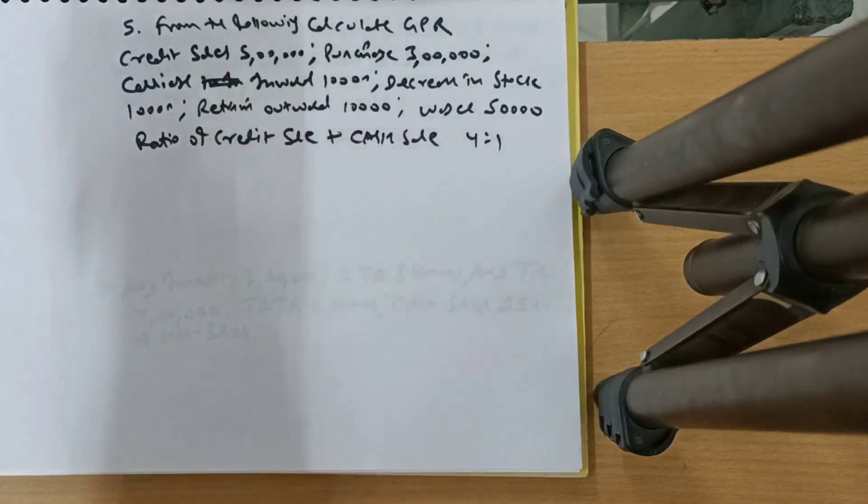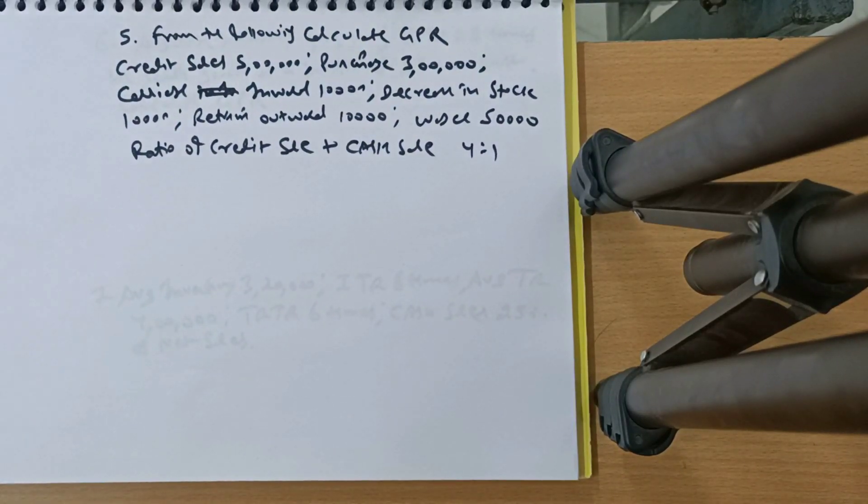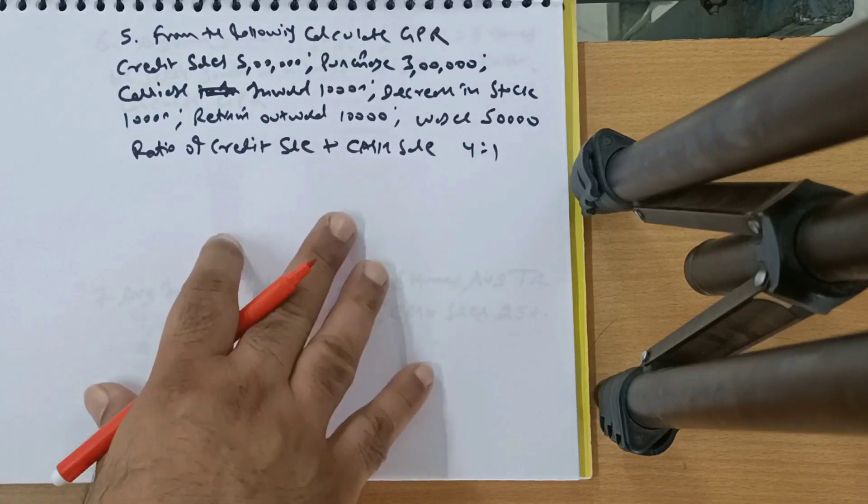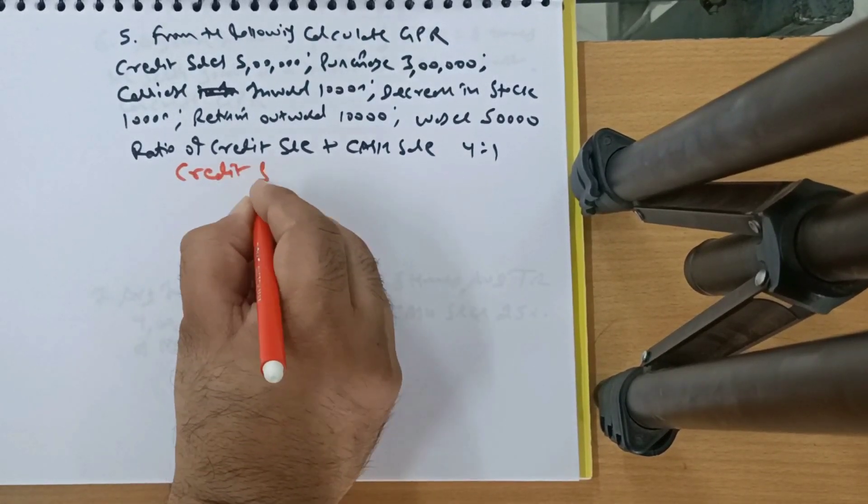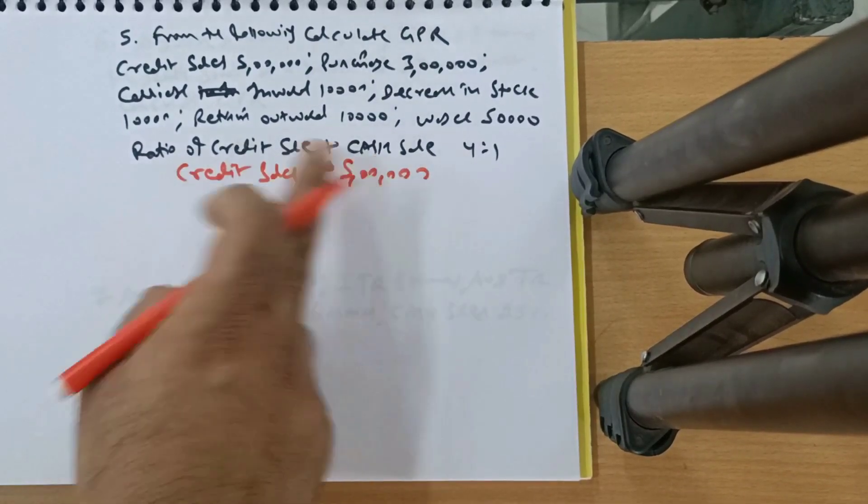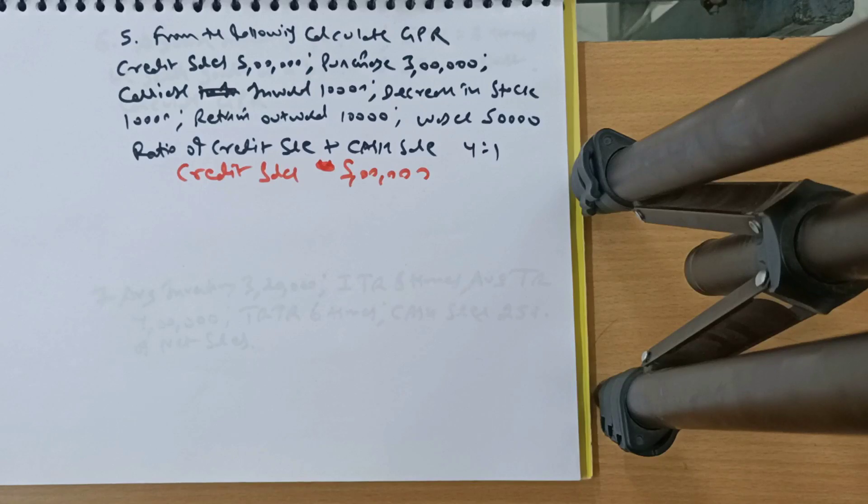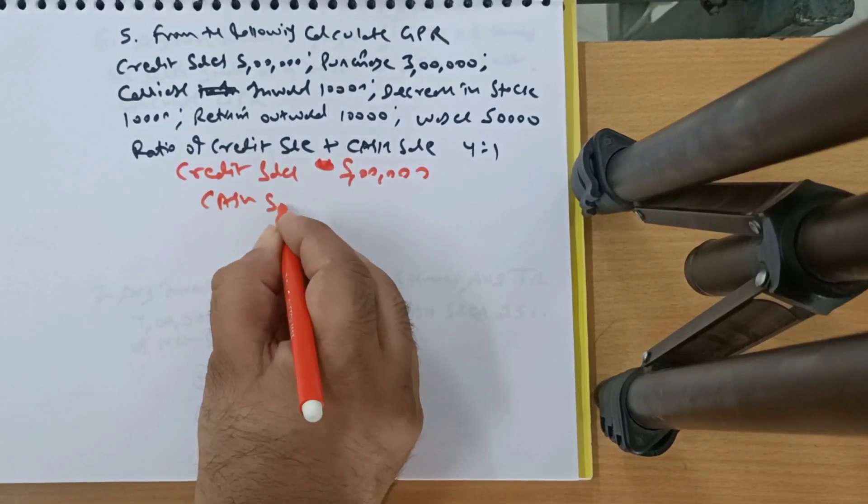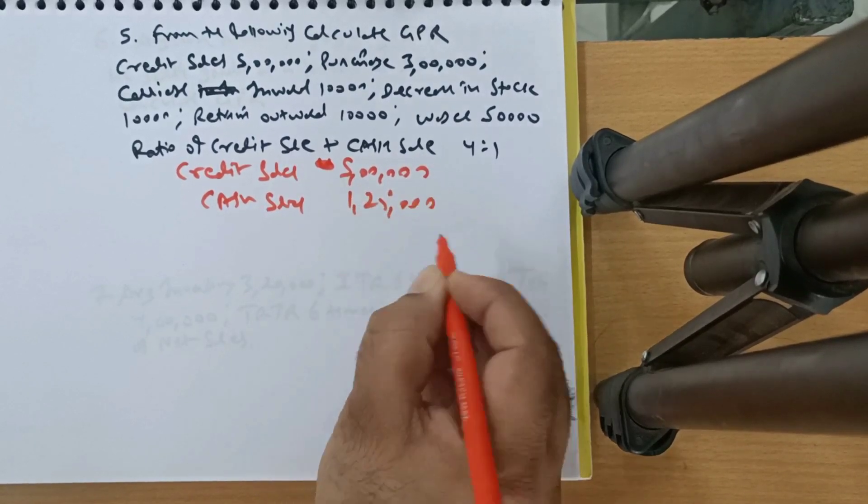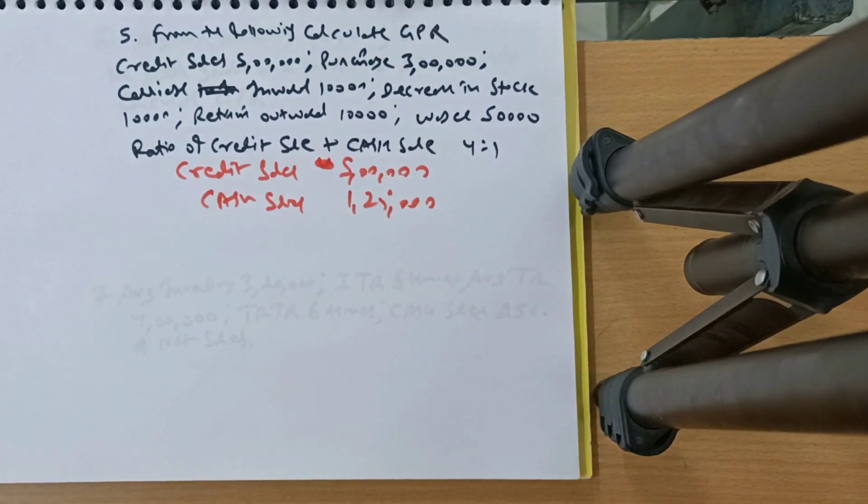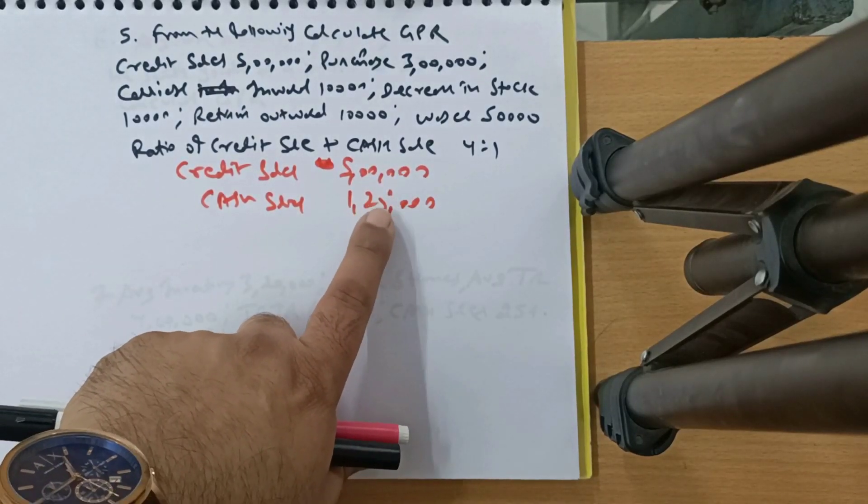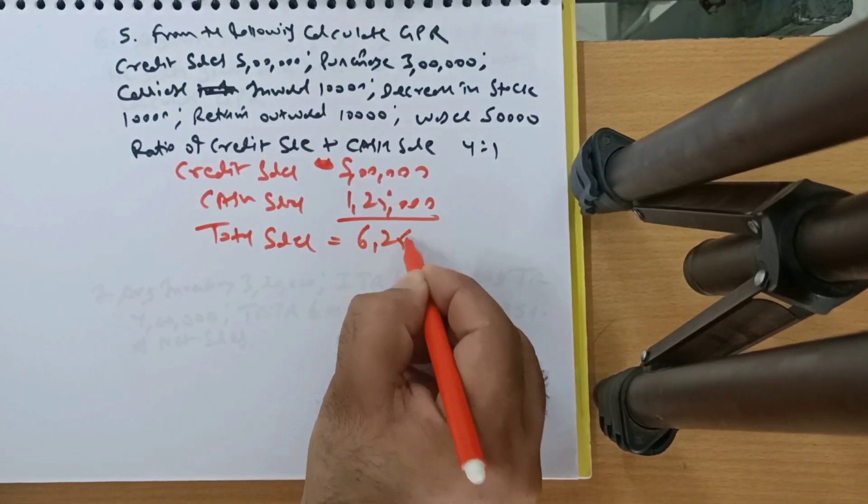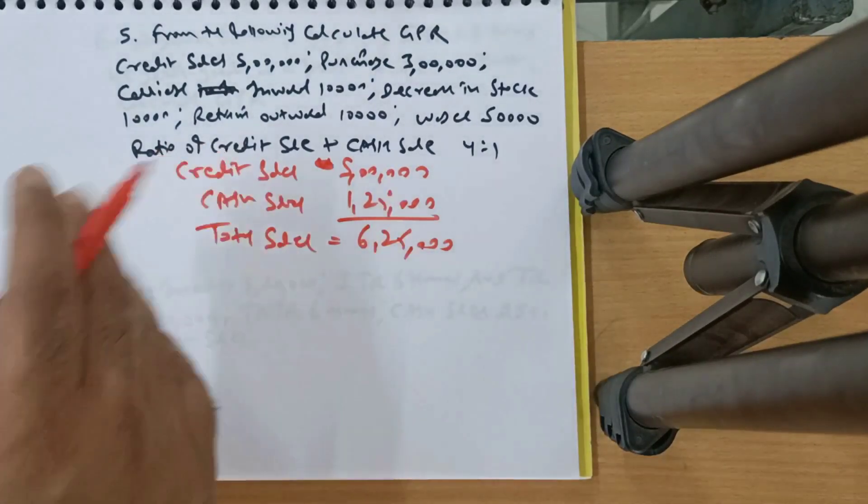Smart students will enjoy this. Next question is also very good. From the following, calculate GPR. Credit sales given, purchases given, carriage inward given, decrease in stock given, return outward given, wages given, ratio of credit to cash sale 4 is to 1. Credit sales is 5 lakhs. The ratio of credit to cash sale is 4 is to 1, meaning 4 times more, credit sale is 4 times cash sale. So cash sale will be 1 lakh 25,000, 5 lakh divided by 4. So this gives us total sales, add both sides. This becomes 6 lakh purchase.